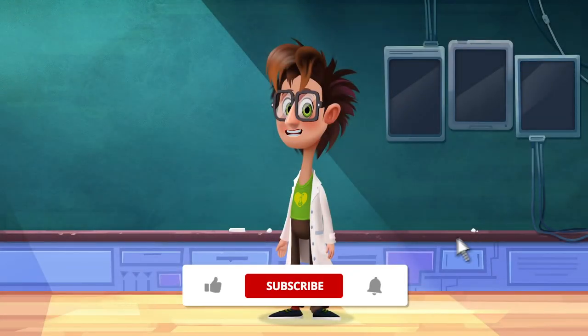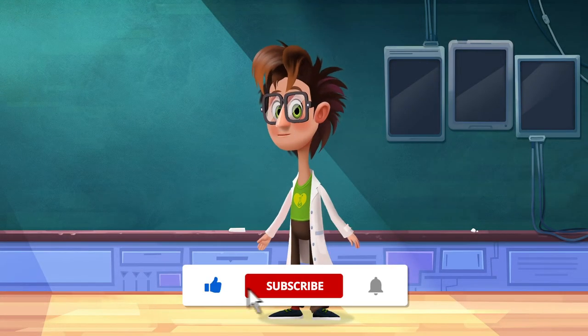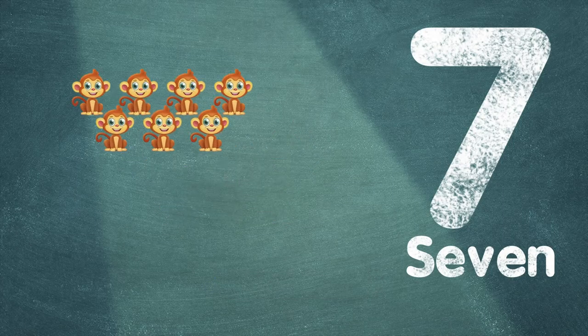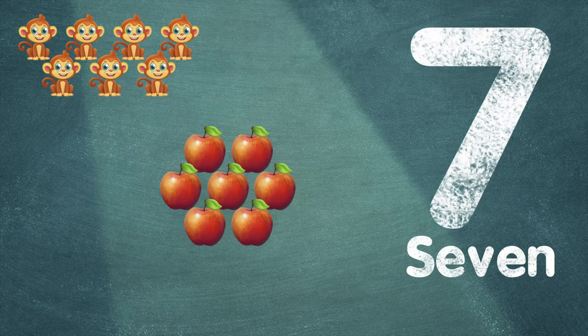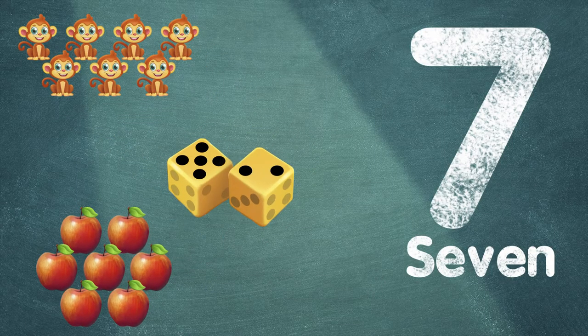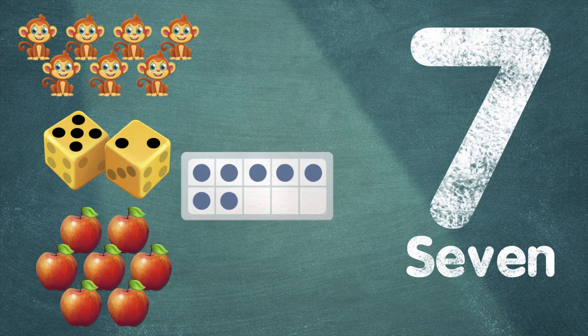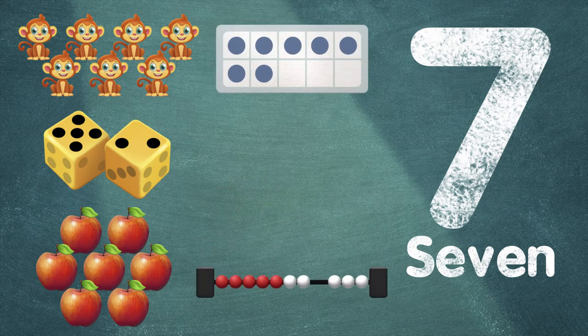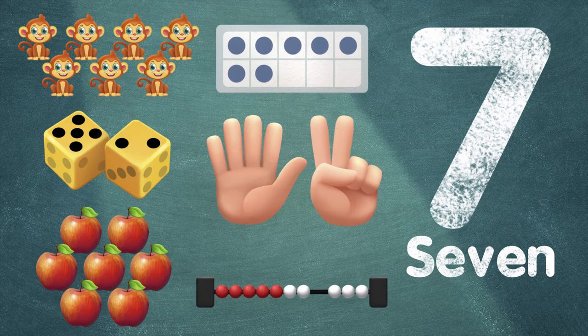Let's learn about the number seven. What does it mean? Seven monkeys, seven apples. Look, we can show seven in so many different ways.